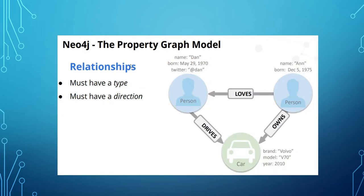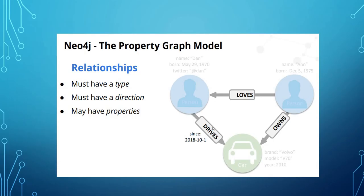The second thing is the relationship. A relationship connects two nodes. It must have a type — the type is the name of the relationship. For example: 'loves', 'owns', 'drives'. Person one drives the car, person one owns the car, and node 2 loves node 1. The relationship must also have a direction — direction is very important. For example, person one drives a car; the car cannot drive the person, so the direction matters.